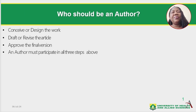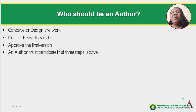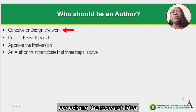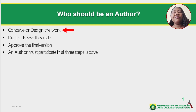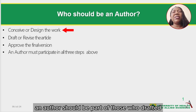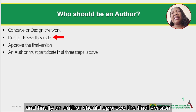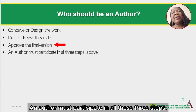Now, who should be an author? Who qualifies to be an author? The person should be part of conceiving the research idea or designing the work. Secondly, the person should be part of those who drafted or revised the article. And finally, an author should approve the final version. An author must participate in all these three steps.